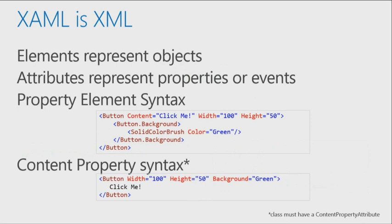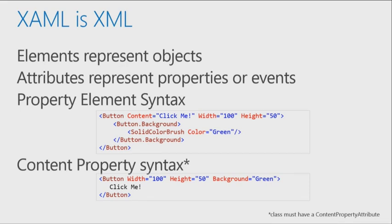A button is an object, and the button has properties like content, width, and height — we represent those properties as XML attributes in the code. Then we have a richer syntax called property element syntax. You see it with button.background — instead of just 'background equals green' using type converters, you can use property element syntax and write 'button.background', 'SolidColorBrush color equals green', giving you an element syntax. In some cases you'll need to use that kind of syntax, and as you become an expert you'll be effective at picking which to use.